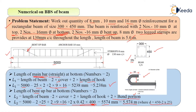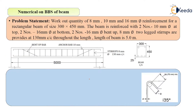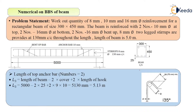Now let's calculate the length of the anchor bars — the two top bars of 10 mm diameter. The formula is the same as for the straight bar: length of beam minus two times cover plus two times hook length, with no bend term. Putting in values: 5000 mm minus two times 25, plus two times 9 times 10. This gives 5130 mm, or 5.13 meters.